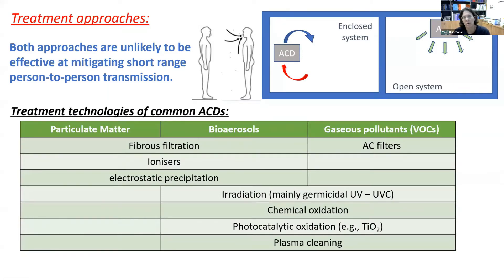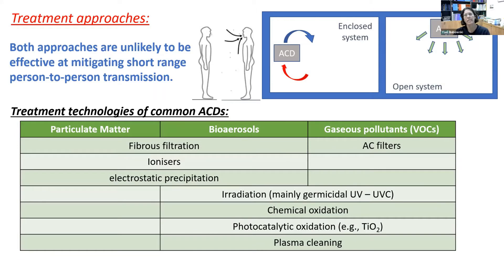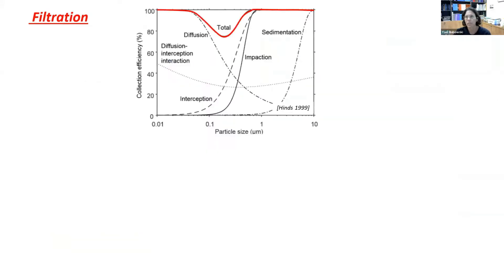With regard to the technologies for treating those three categories of pollutants: for particulate matter — whether general PM or bioaerosols — we have filtration, ionizers, and electrostatic precipitators. For VOCs, we can have sorption on a sorbing media for removal from indoor air, but to actually degrade them, when dealing with bioaerosols or VOCs, we use irradiation — mainly UV radiation — or chemical and photochemical oxidation, as well as plasma cleaners.